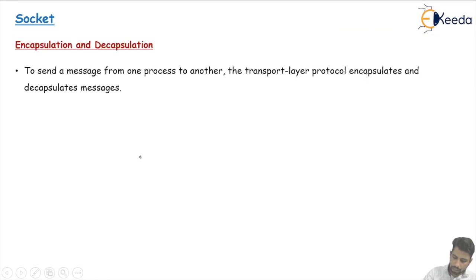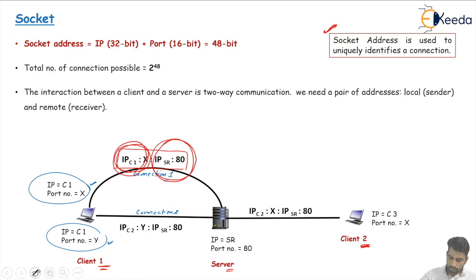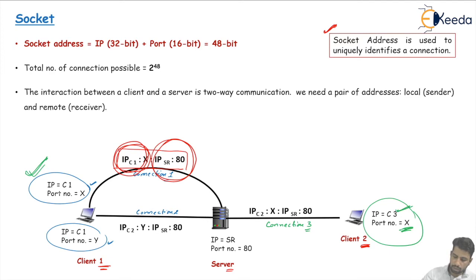Here we define the IP address of the client machine combined with the port address, and the IP address and port address combination of the server machine. Client two also has the same process X running, with the same port number X, and also makes a connection — connection number three. This is a different connection for the server because the IP address of client one and the IP address of client two are different, even though their port addresses are the same.